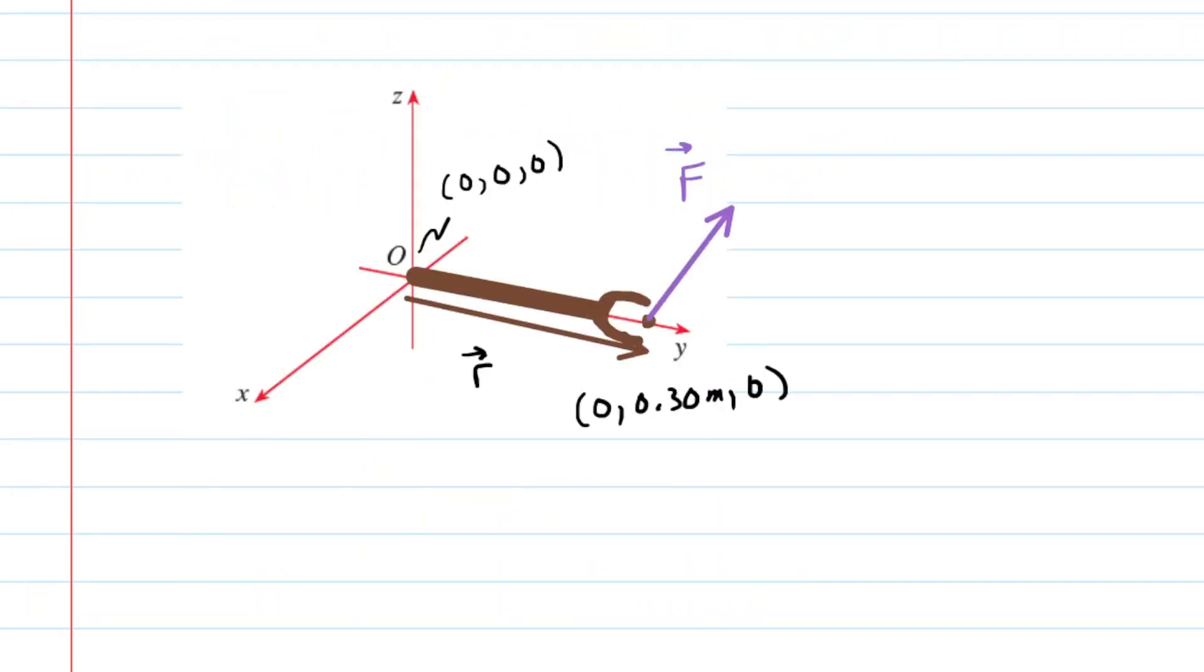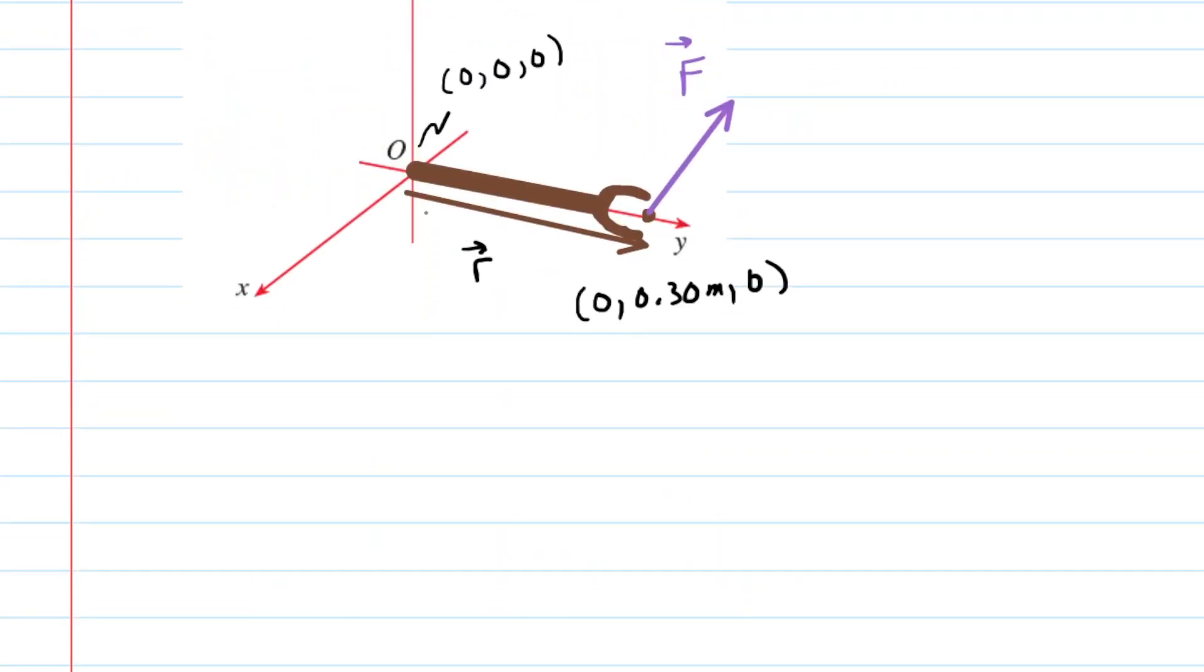What we need is the position vector. So that position vector is a vector drawn from the left end of the wrench to the right end of the wrench. And to get that position vector, we simply take the x, y, z coordinates of the right end and subtract the x, y, z coordinates of the left end.